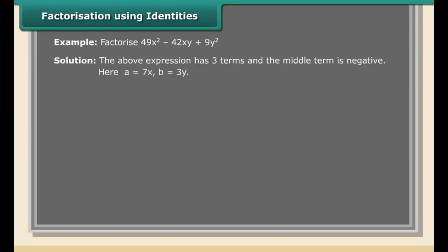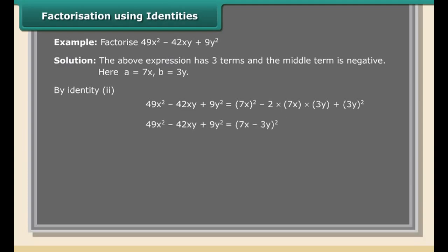Example: Factorize 49x² − 42xy + 9y². The expression has three terms and the middle term is negative. Here a = 7x and b = 3y. By identity 2: 49x² − 42xy + 9y² = (7x)² − 2(7x)(3y) + (3y)² = (7x − 3y)².